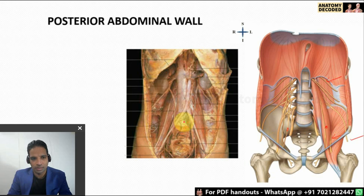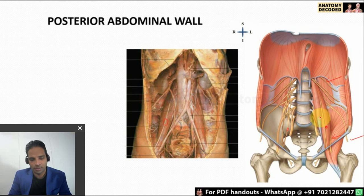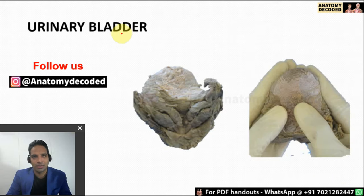In this dissected specimen, just in front of the psoas major you can appreciate the genitofemoral nerve. The other nerves are not seen very clearly in the image, but you should have a basic idea of how the structures are related from above downwards. In the posterior abdominal wall, at least the muscles and the nerves are things you should know.